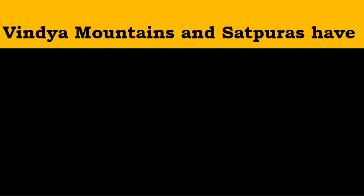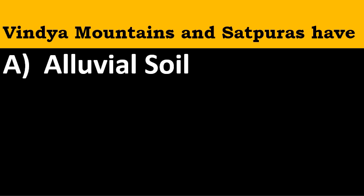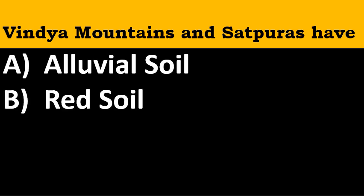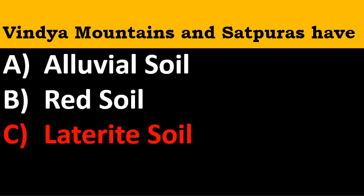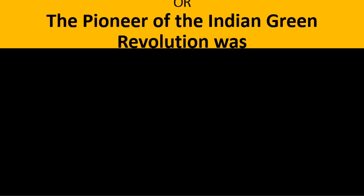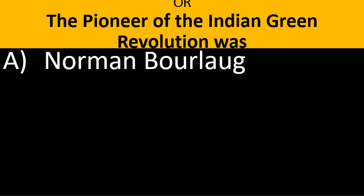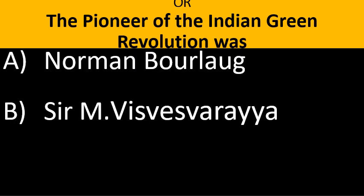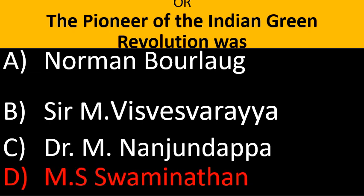Third MCQ: The Vindhya mountains and Satpuras have — the four options are alluvial soil, red soil, laterite soil, and black soil. The correct answer is laterite soil. Fourth MCQ: The pioneer of the Indian Green Revolution was — the correct answer is M.S. Swaminathan.